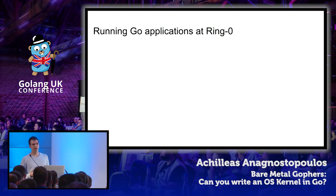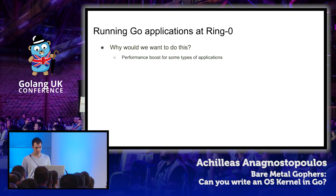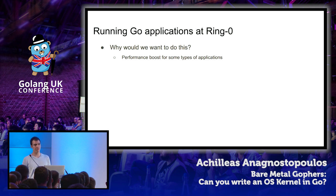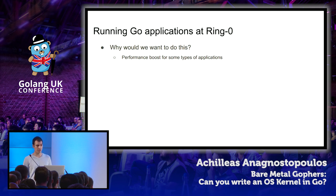What could motivate us to take a Go app and run it at ring zero? Some types of applications can experience a performance boost. An example would be an application that processes a large volume of network packets, such as a very busy HTTP server. Whenever a packet arrives, the device driver stores it into a buffer in kernel memory, and the kernel has to copy this packet to another buffer that user space can access. Moving this application to ring zero eliminates this additional copy requirement, improving throughput and reducing latency.